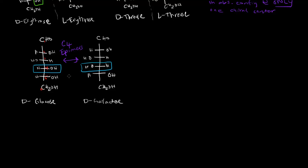Most of the time in biochemistry, it's easiest to think about these sugars in a different form from Fischer projections. What we're going to think about is Haworth projections, which are circular structures. Glucose and galactose can both exist in linear form, but they can also exist in cyclic forms called Haworth projections.